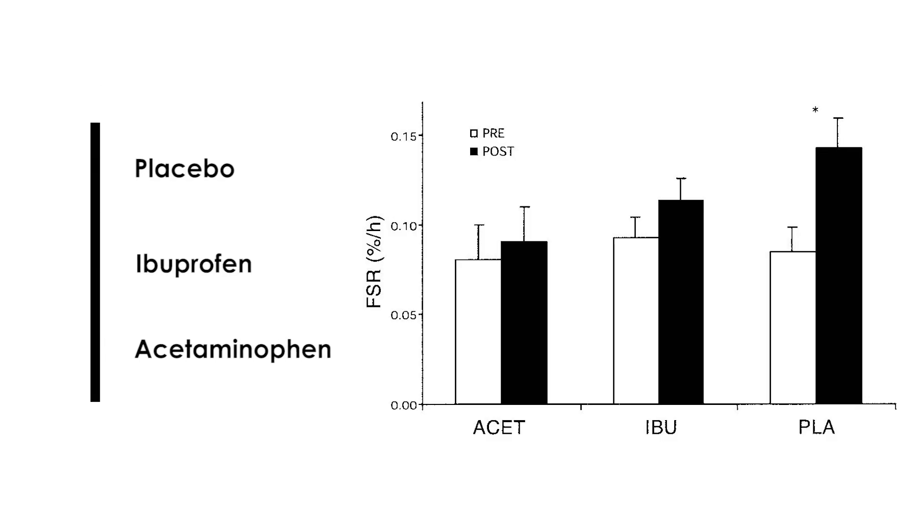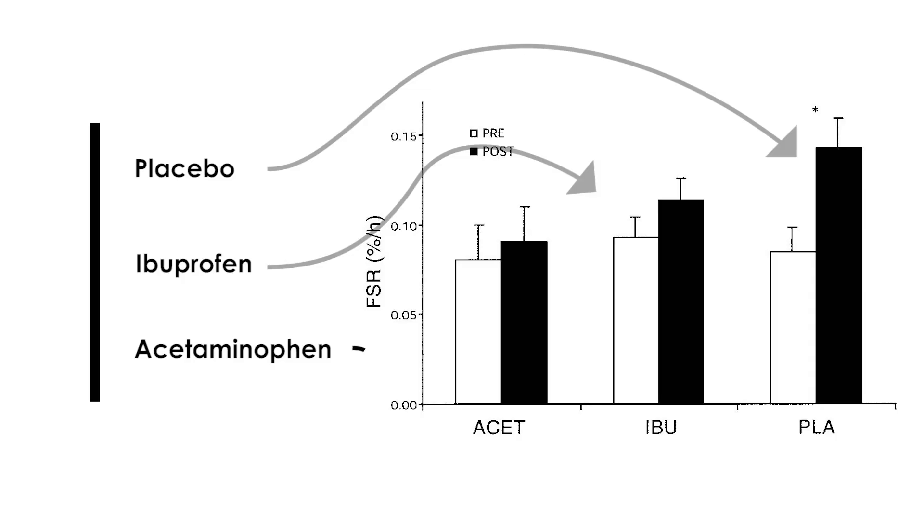The results showed an increase in protein synthesis following exercise in the placebo group. As expected, ibuprofen significantly reduced the protein synthesis response to exercise. However, a surprising outcome was that acetaminophen also significantly reduced the protein synthesis response to exercise through a mechanism that is still unclear.